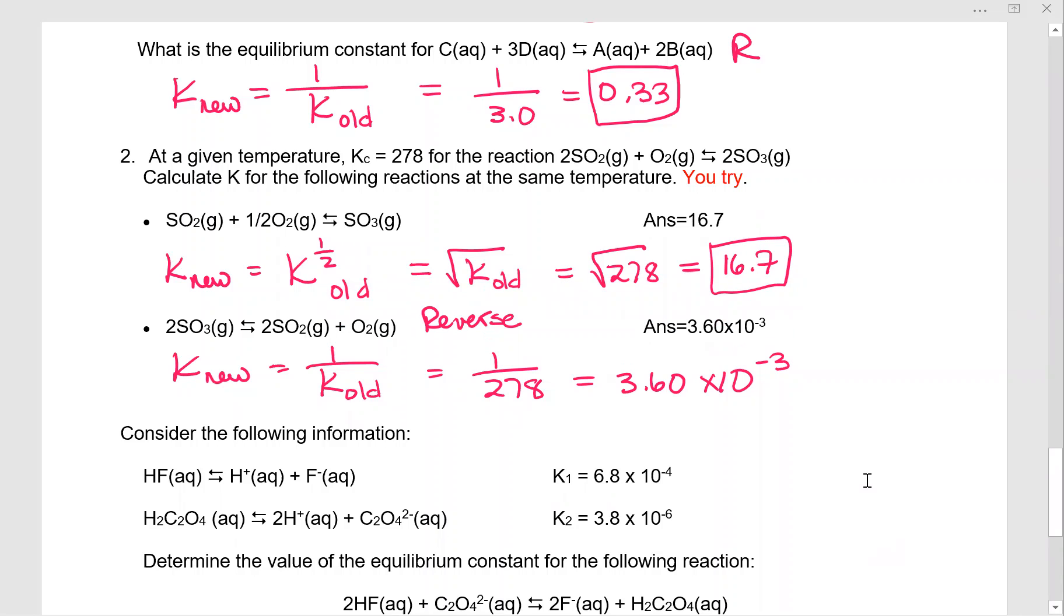Let's see if you got to the right answer. So the first one here that I'm circling, everything was divided by one half. So instead of two moles of SO2, we had one mole of SO2. So this means we're going to raise K to the one half power. Remember, that means you're actually taking the square root. So we take the square root of 278 and we get 16.7.